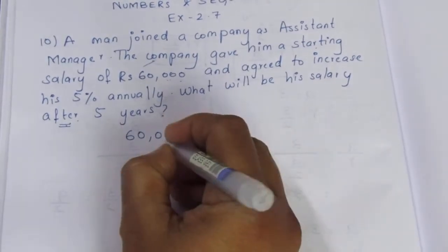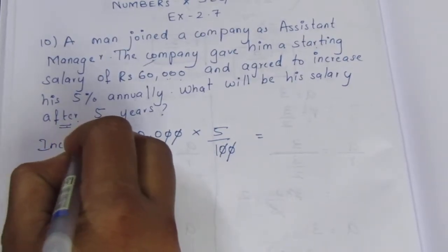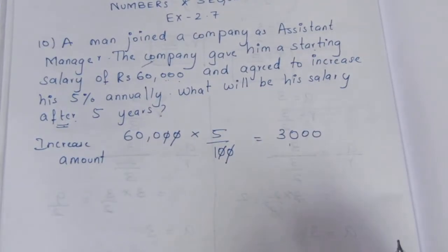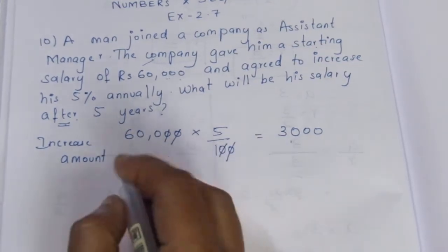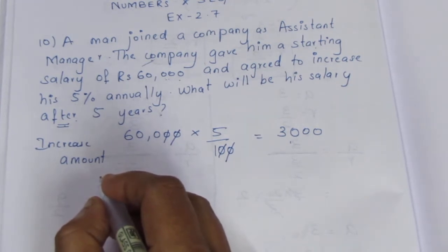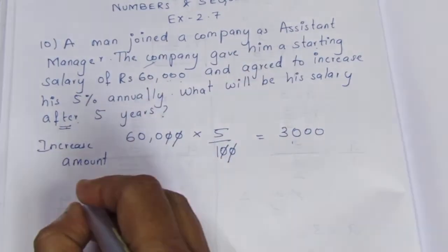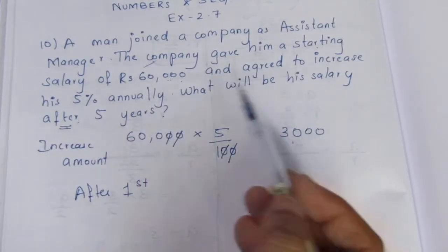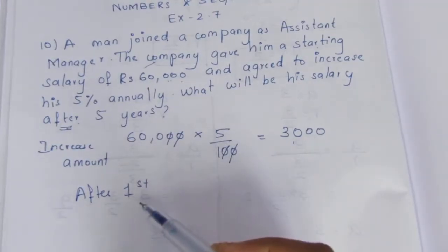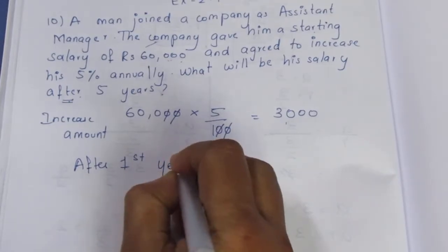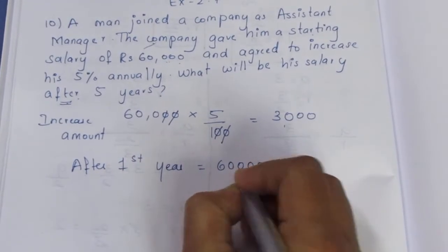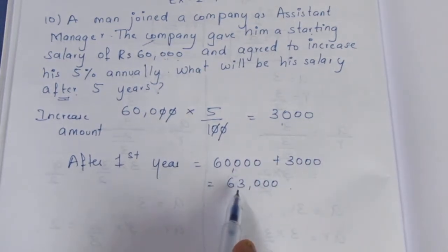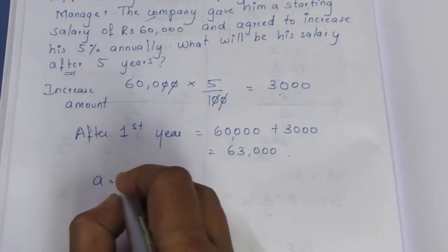We multiply the amount by 5%. Cancelling zeros: 5 times 6 is 30, giving 3,000 increase. So at the end of the 1st year, starting 60,000 plus 3,000 gives 63,000. So after the 1st year, T1 = 63,000.